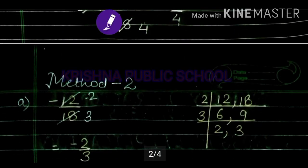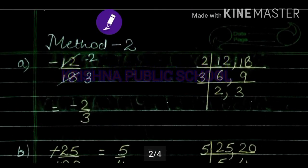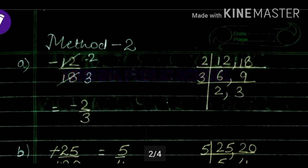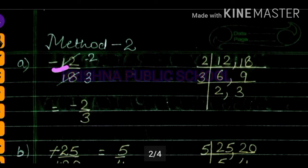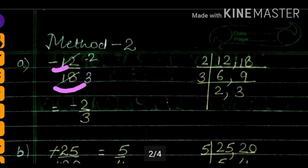Now we will study the second method to find the standard form. Here the given rational number is minus 12 upon 18. In this example, the negative sign is in the numerator, which means the sign is already in standard position.